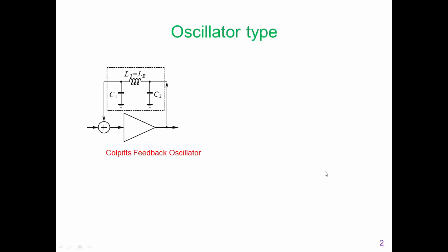The oscillator we are looking at is a Colpitts oscillator. What is shown here is a Colpitts feedback oscillator. We see the Colpitts network in the feedback path. The characteristics are that we have a capacitor at the feedback point, another capacitor at the output — both of those are in shunt — and then there is an inductor connecting the output back to the input.